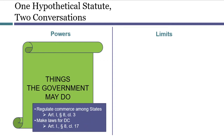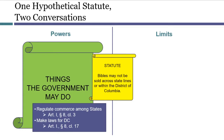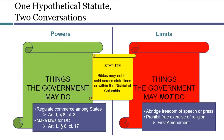So what about this law: 'Bibles may not be sold across state lines or within the District of Columbia'? This is a troubling law, but it's not because Congress lacks the power to enact it. Sales of goods across state lines — that's a type of commerce — and Bibles are a type of goods. It's also a regulation of what's allowed to happen within the District of Columbia. In this case, the reasons why this law is troubling are not found in the powers conversation. Instead, they come up during the limits conversation. Here we see that the government may not abridge freedom of speech or the press, and it may not prohibit free exercise of religion.